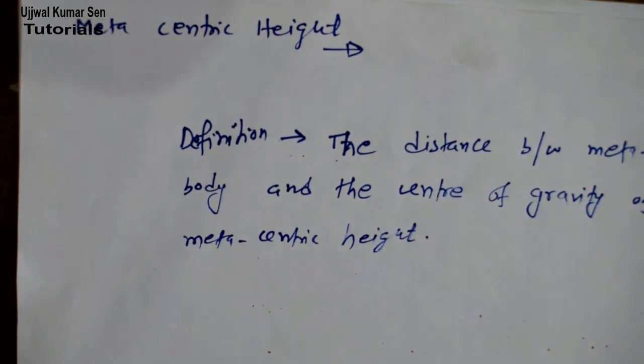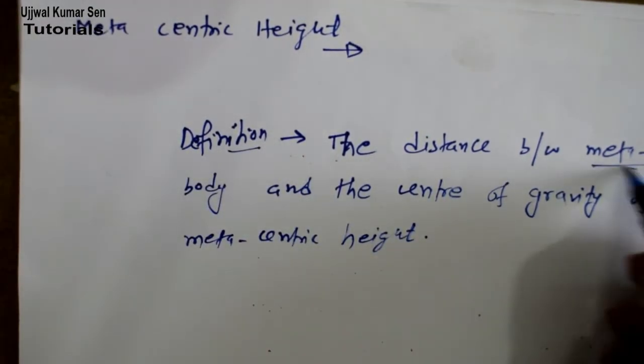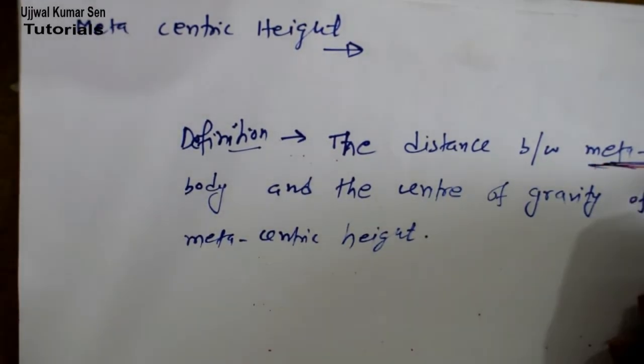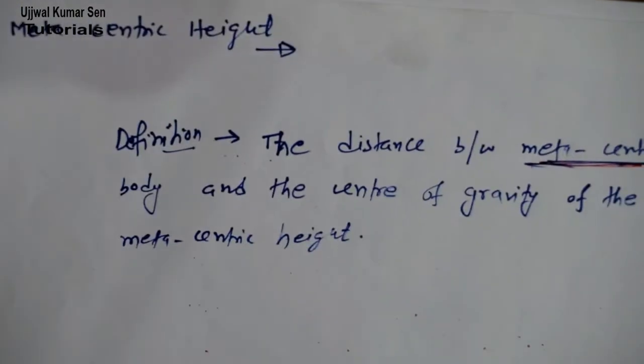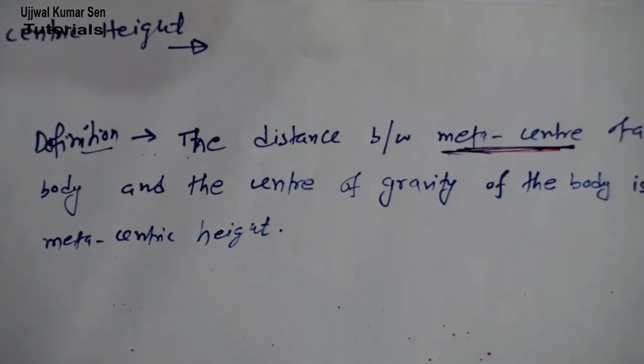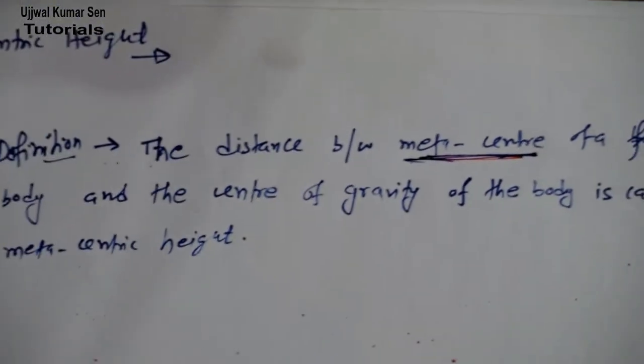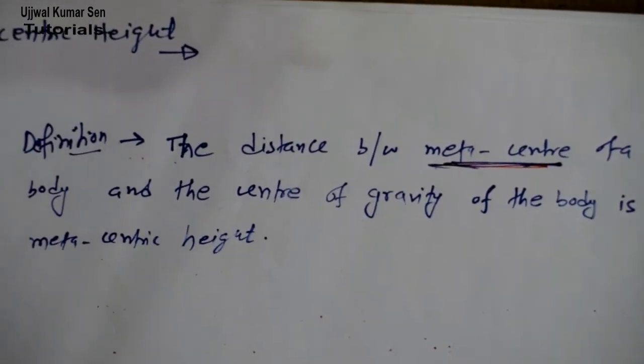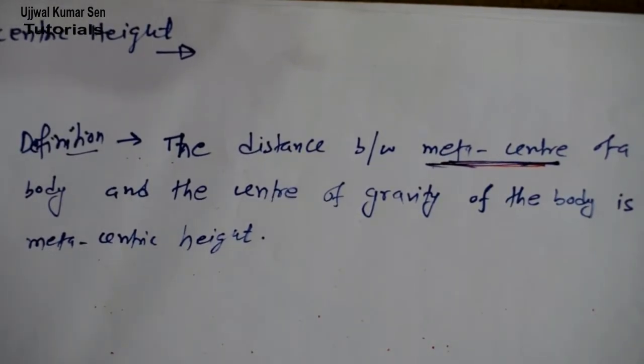So this is known as metacentric height. The distance between meta center of a floating body and the center of gravity of the body is called metacentric height. I hope you can see this. Now come to the next point.